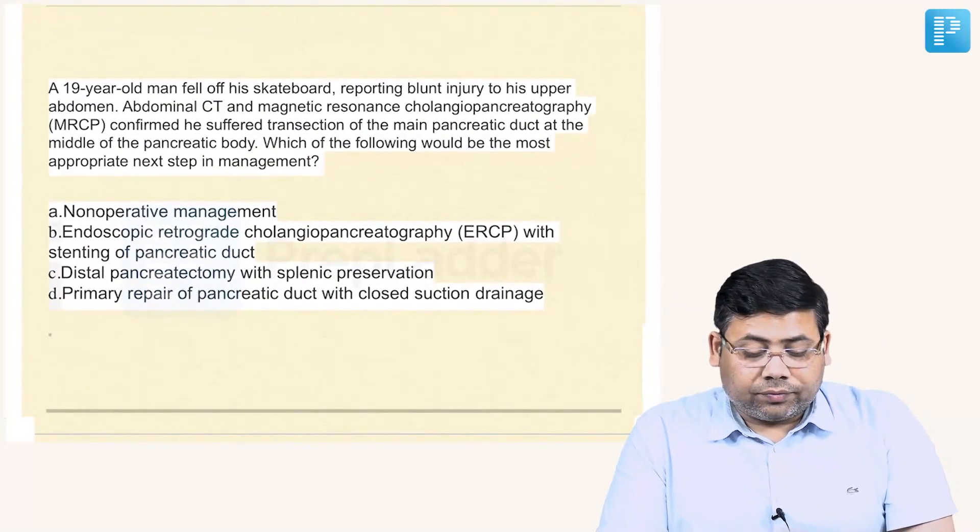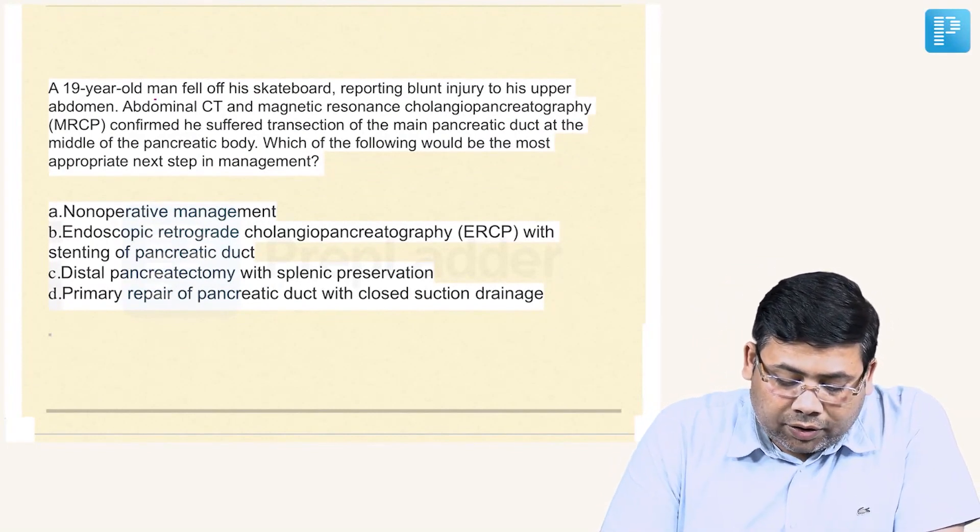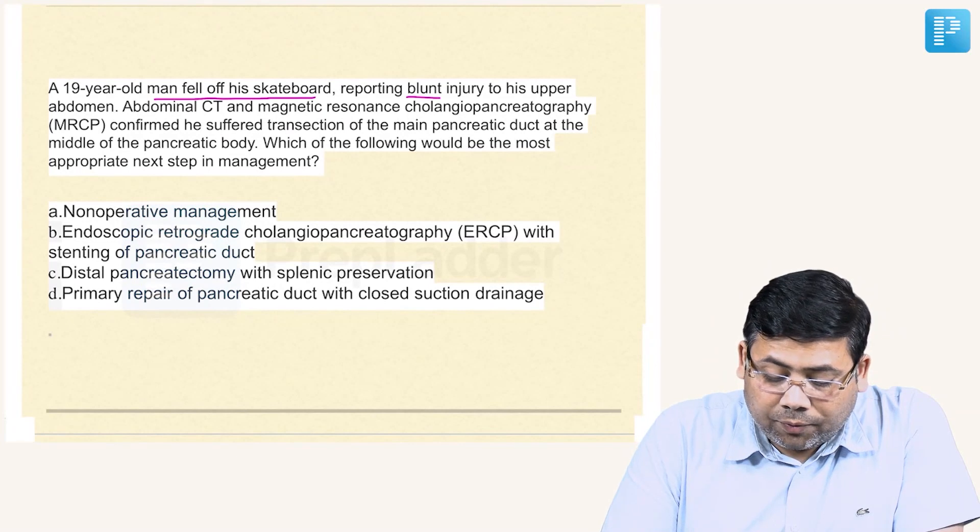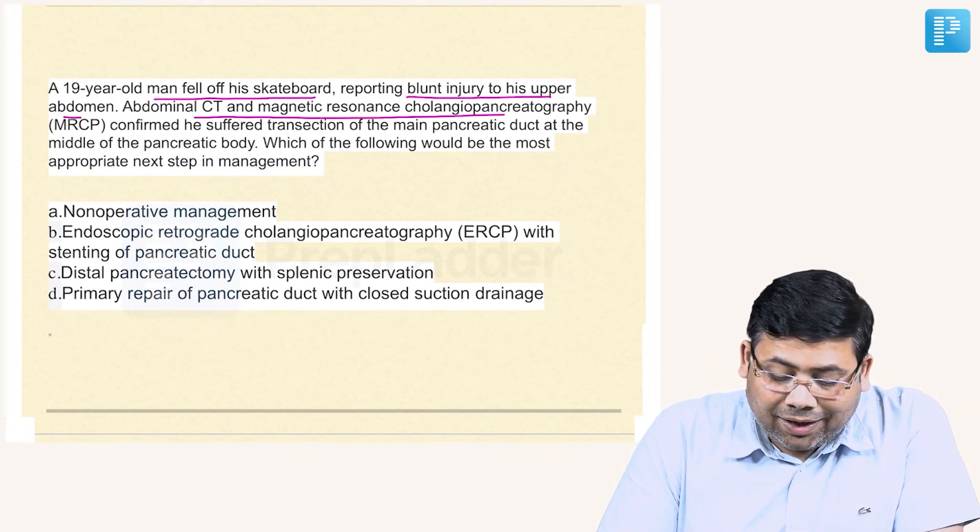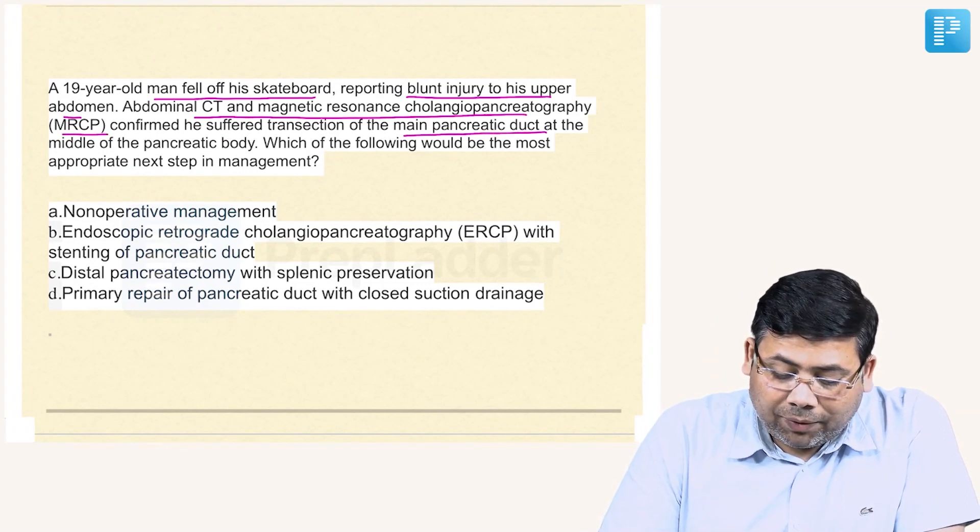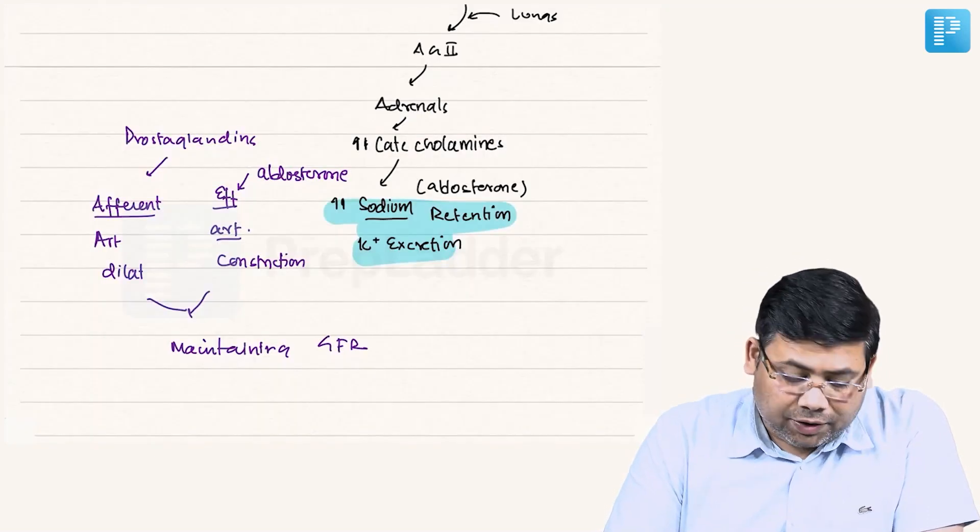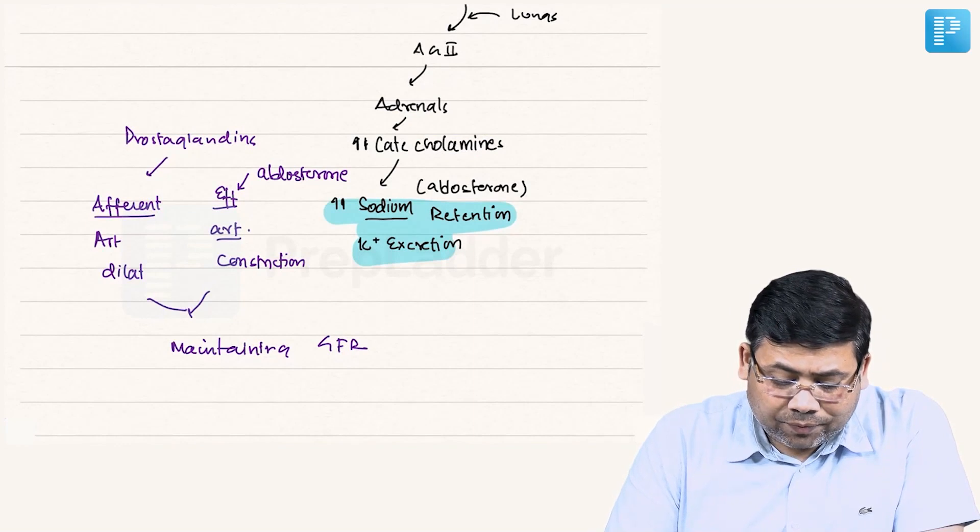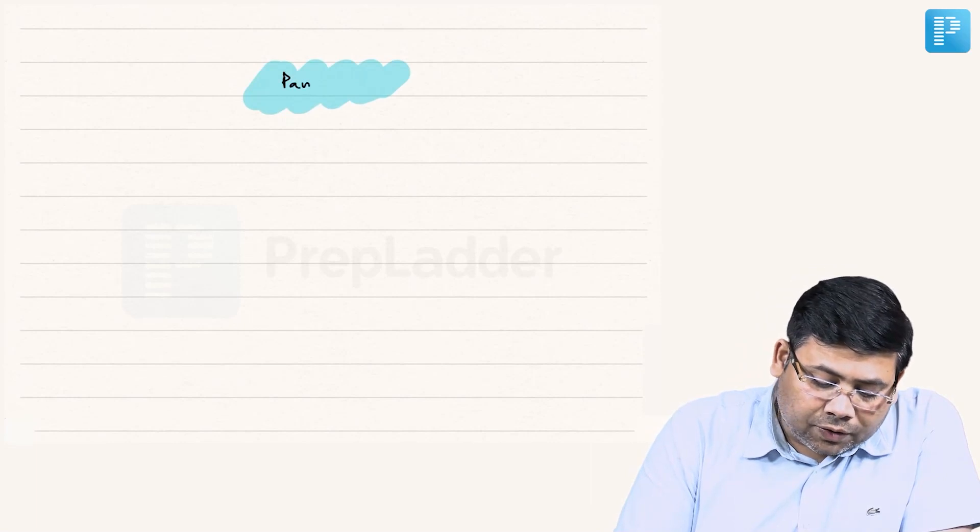Now we go to the next question. A 19-year-old man fell off a skateboard reporting blunt injury to his upper abdomen. The abdominal CT and MRCP reveals pancreatic injury. You can see main pancreatic duct at the middle of the body. Which of the following will be the most appropriate management? When we are talking about this concept, before that you have to understand how do we define a pancreatic injury.